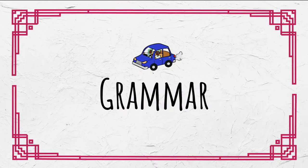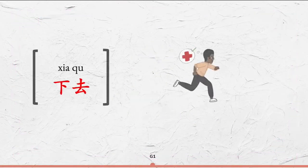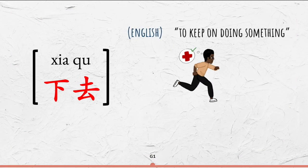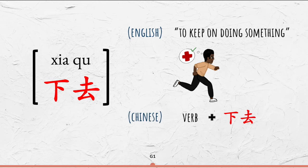Now let's move on to the grammar. Similar to the English to keep on doing something, verb plus 下去 means the action continues.